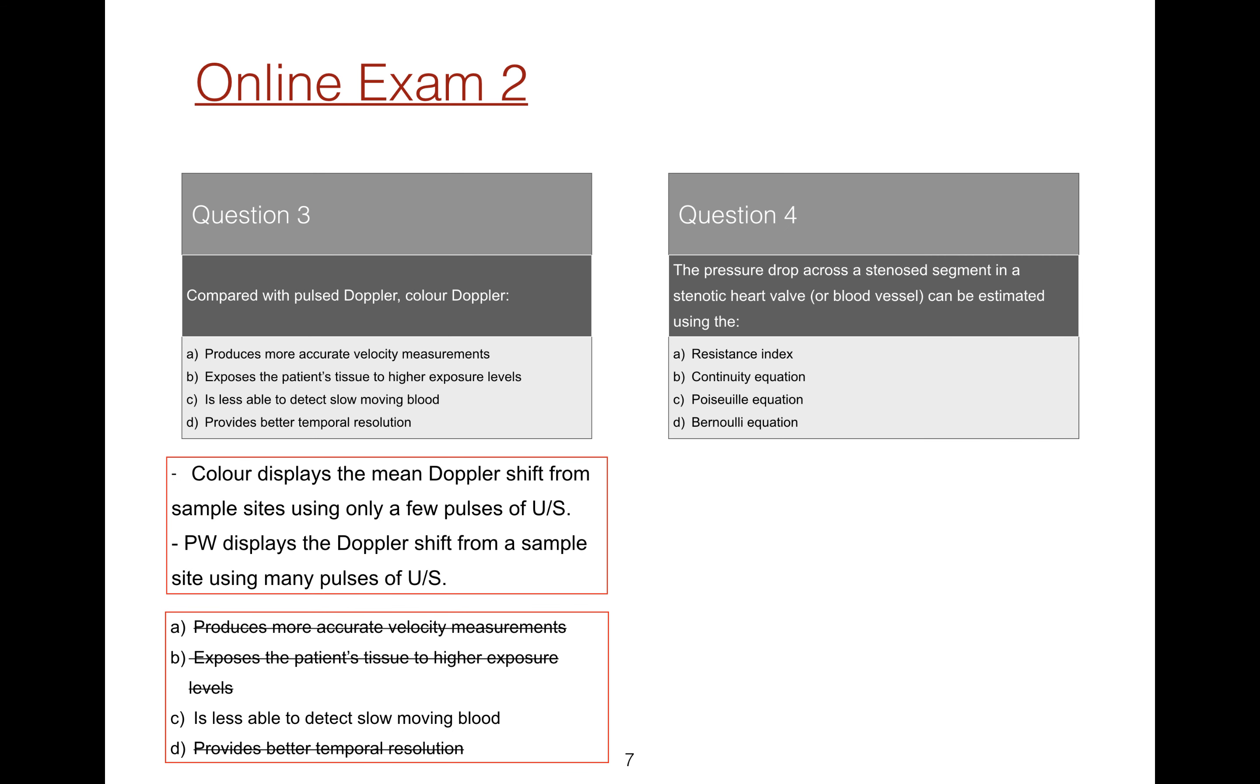Question 4: The pressure drop across a stenosed segment in a stenotic heart valve or blood vessel can be estimated by using which of the following? The simplified Bernoulli equation is used to estimate pressure drop.